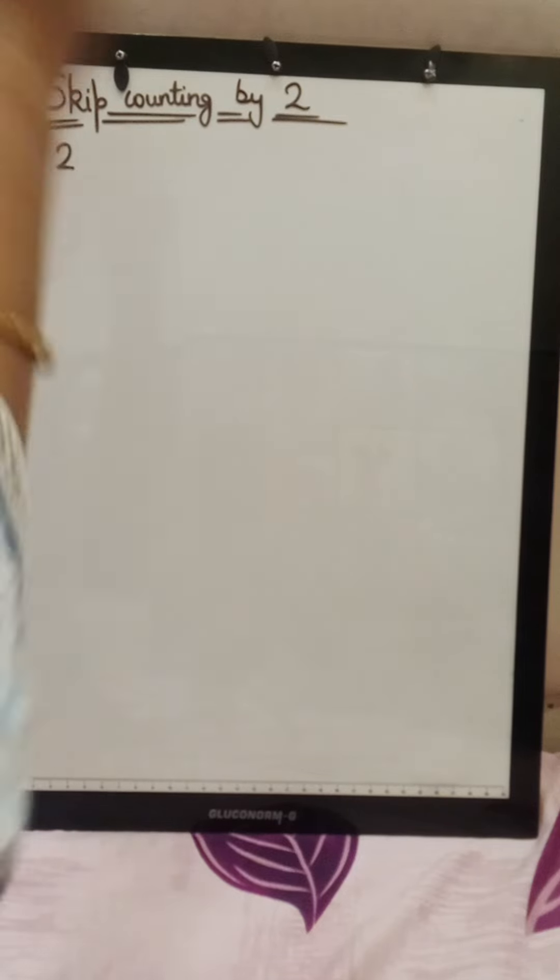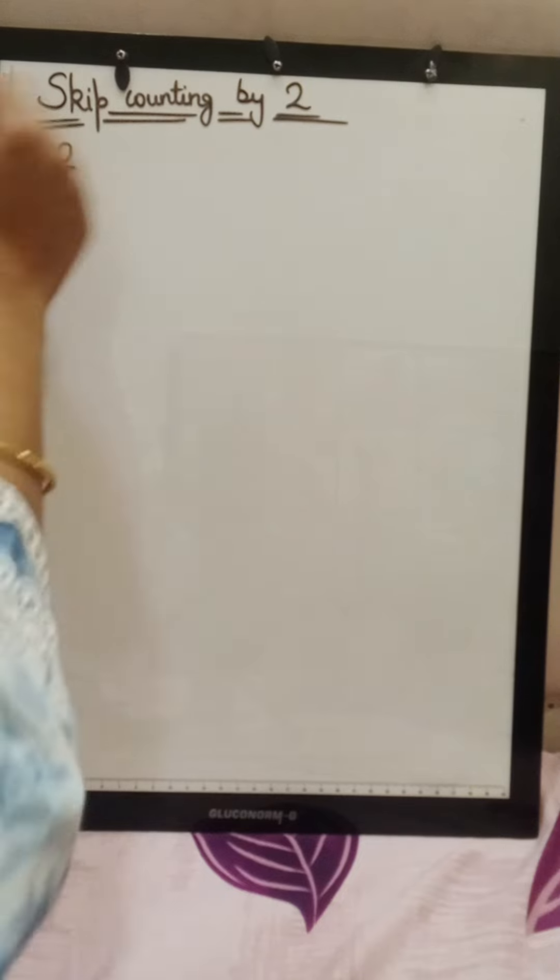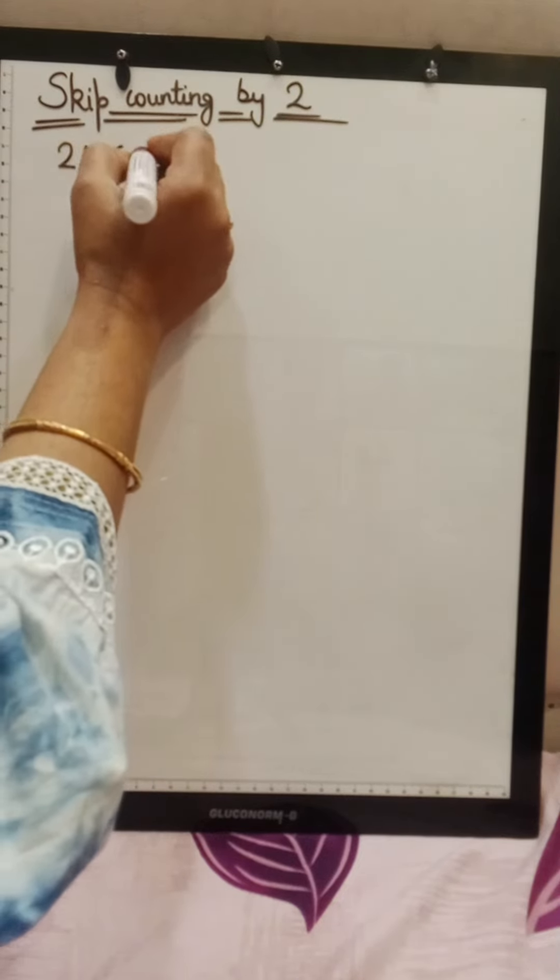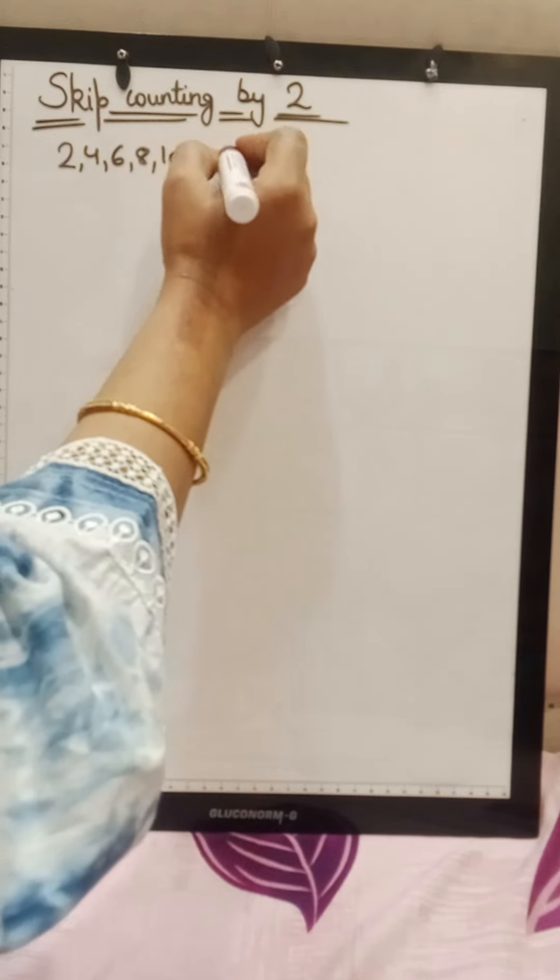If we have written 2, then we will do 2. I said that we will add that number twice. 2 plus 2 is 4, 4 plus 2 is 6, 6 plus 2 is 8, 8 plus 2 is 10, 10 plus 2 is 12.